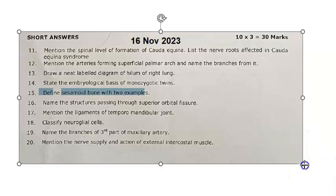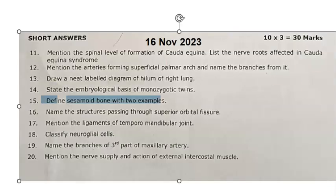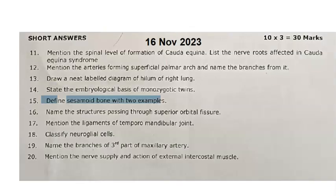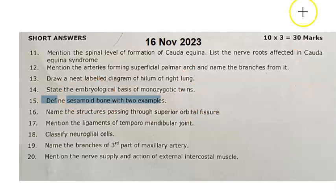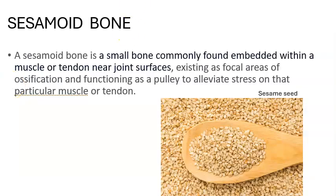Time to look at this question asked in November 2023 for three marks: Sesamoid bone — define it and give two examples. So this has been asked in the anatomy final exam theory paper. Let's get started with the definition.